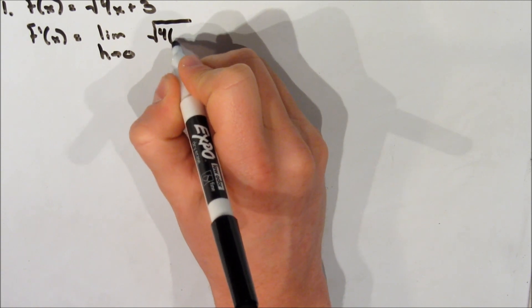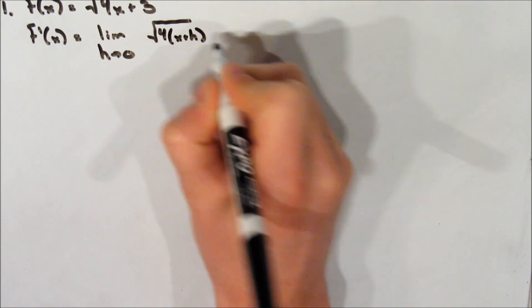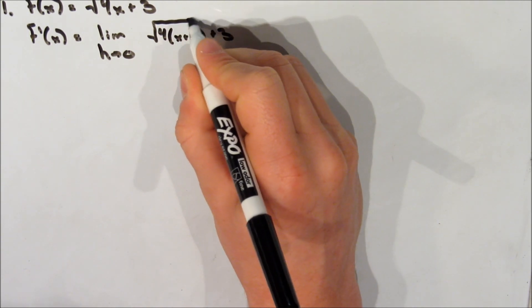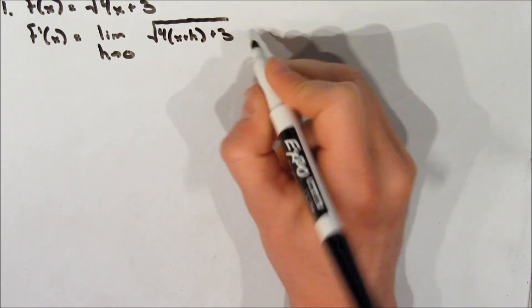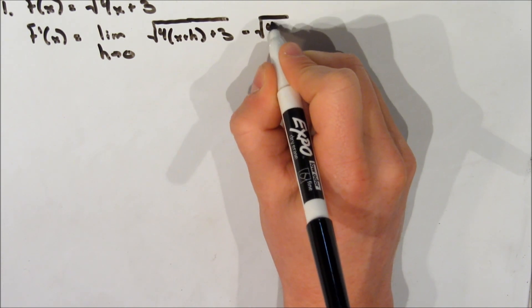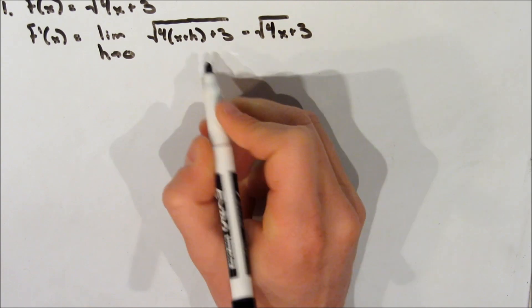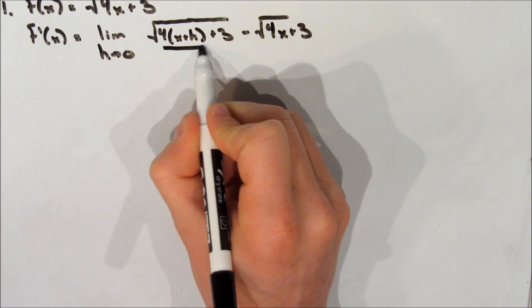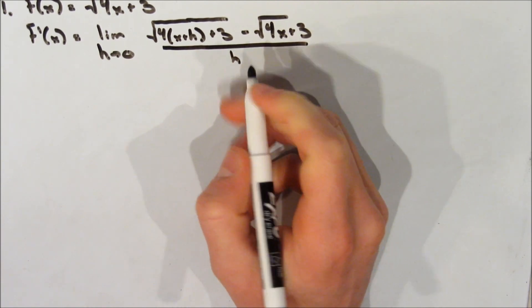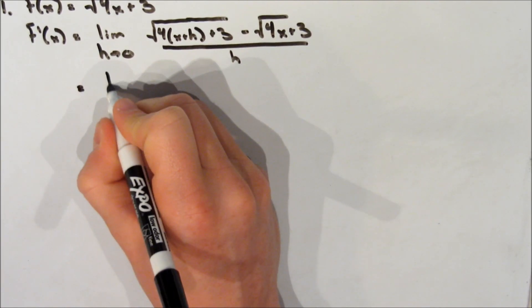We're going to substitute x plus h everywhere where we see an x in our original function, so we get the square root of 4 times (x plus h) plus 3, and now we subtract f of x, which is the square root of 4x plus 3, and all of this is over h.